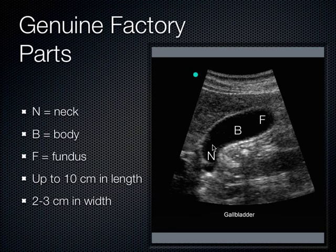Posterior to the gallbladder is the duodenum — specifically we usually see the second portion of the duodenum just behind the posterior gallbladder wall. What's inside the lumen of the duodenum? Air. Air can sometimes cast a dark shadow or a bright shadow — it's variable. Doesn't this look almost like a stone with a shadow behind it? No — it's just air in the duodenum.